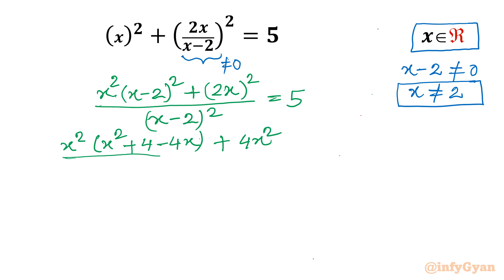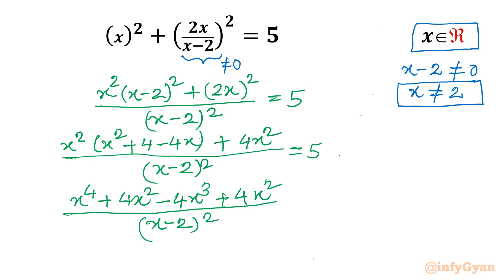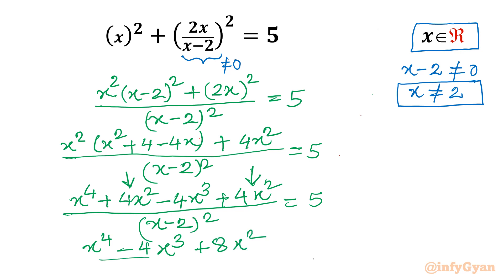The denominator remains (x - 2)² and the right hand side is 5. Applying the distributive law: x⁴ + 4x² - 4x³ + 4x². Adding the two 4x² terms gives 8x². So we have (x⁴ - 4x³ + 8x²) / (x - 2)² = 5.